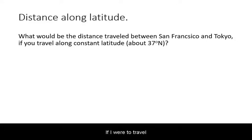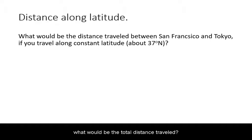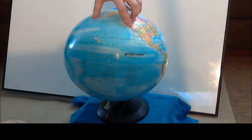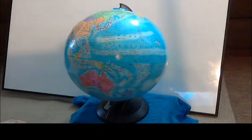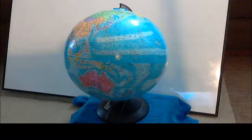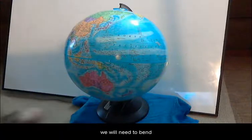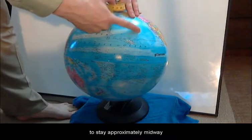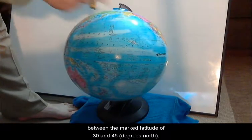If I were to travel from San Francisco to Tokyo but remain on the same latitude, what would be the total distance traveled? To measure this, we first need to find San Francisco and Tokyo. Because we are traveling along constant latitude, we will need to bend the measuring tape a little bit to stay approximately midway between the marked latitudes of 30 and 45.